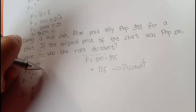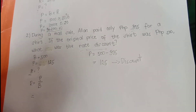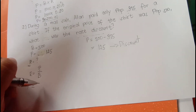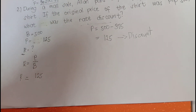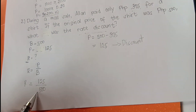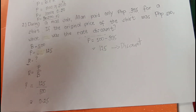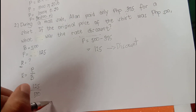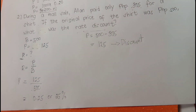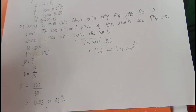The percentage is 125. We can now get the rate. The rate is the percentage over the base — 125 over 500, which is the original price. 125 over 500 is equivalent to 0.25, or multiplied by 100, it will become 25%. Therefore, the rate discount of Alan is 25%.